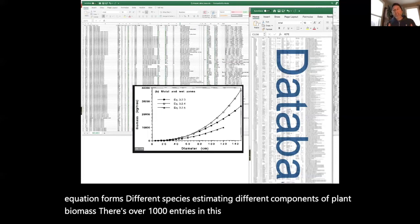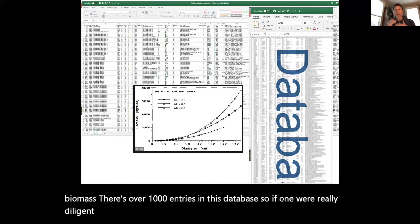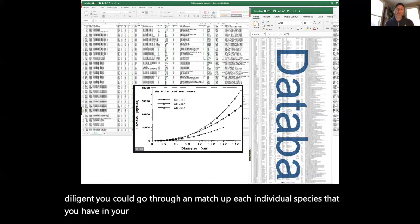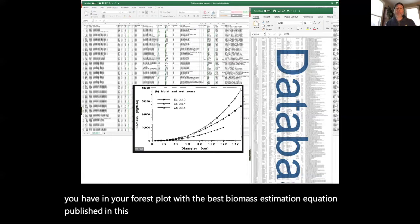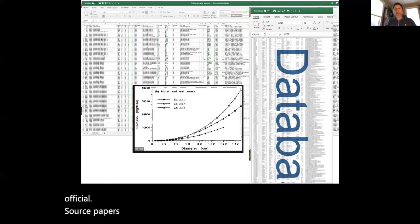There's over 1,000 entries in this database. If one were really diligent, you could go through and match up each individual species that you have in your forest plot with the best biomass estimation equation published in this database. In the database, there's even links to the official source papers. However, some people have done you a favor.